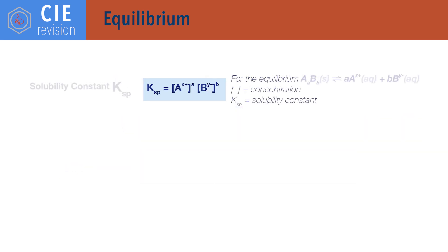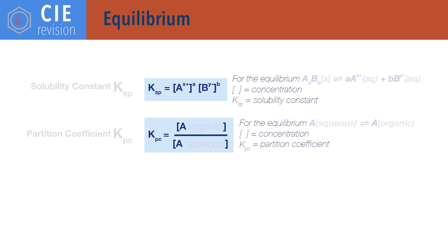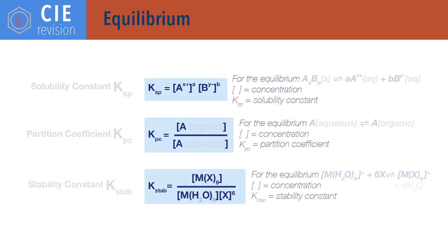Ksp equals concentration of ion A times concentration of ion B, each raised to the power of their molar ratio to each other in the solid AB, where Ksp is the solubility constant and concentration is given in moles per decimetre cubed. Kp — the partition coefficient — equals concentration of A in organic phase divided by concentration of A in aqueous phase, with concentration in moles per decimetre cubed. Kstab equals concentration of MX6 divided by concentration of M(H2O)6 times X to the power 6, where Kstab is the stability constant, MX6 is the substituted metal complex ion, M(H2O)6 is the unsubstituted metal aqua ion, and X is the ligand being substituted.